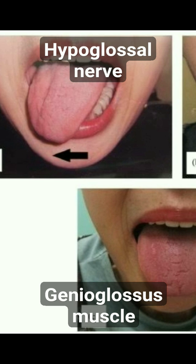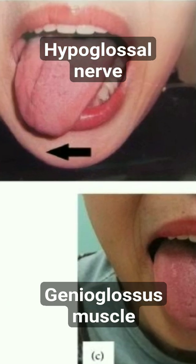This clearly shows that the left side genioglossus continues to push the tongue to the right. We can also clearly see there is wasting of the right half of the tongue. So there is right-sided tongue paralysis — a right hypoglossal nerve palsy.